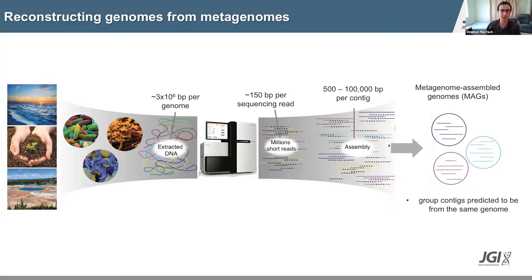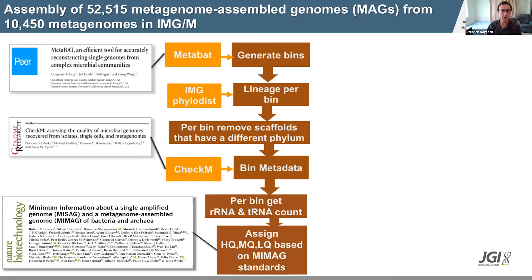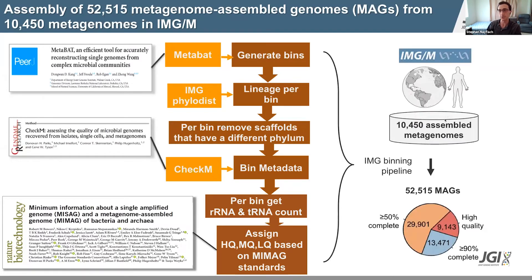There are computational methods that do this prediction step based on shared features of these contigs, like their nucleotide composition and abundance in the sample. Many of the co-authors and colleagues on this study constructed an automated pipeline to reconstruct these MAGs directly from the metagenomic data sets in IMG. Applying this pipeline to a little over 10,000 assembled metagenomes from IMG yielded over 52,000 metagenome-assembled genomes, some of which were of extremely high quality.